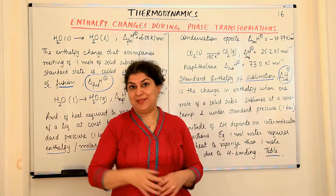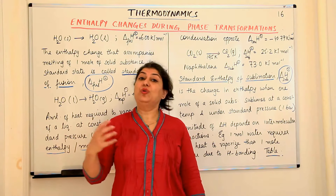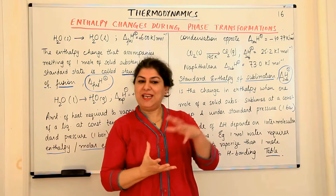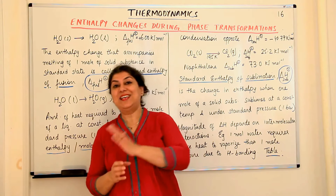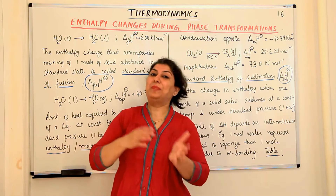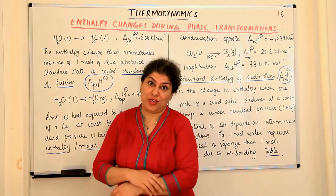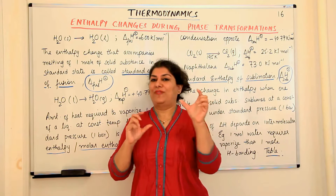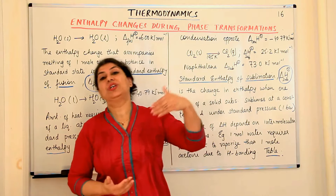The reverse also takes place. When solid ice turns into liquid, it absorbs heat, so the value of the enthalpy is positive because the heat of the system is increasing. If the opposite takes place — that is, liquid water turning into ice — it will give out the same amount of heat. That would be the enthalpy of freezing. The amount of heat, that is the enthalpy change, remains the same, but the positive enthalpy would turn into negative.